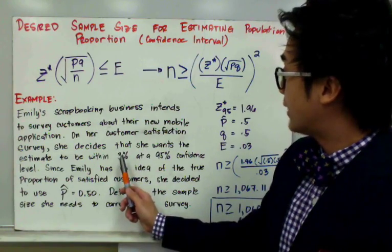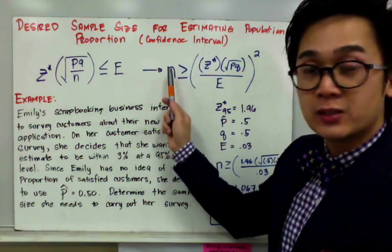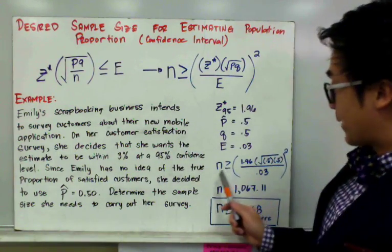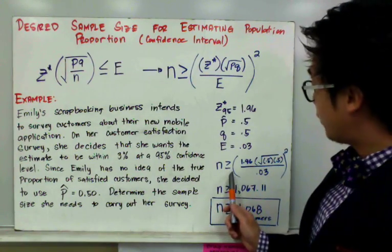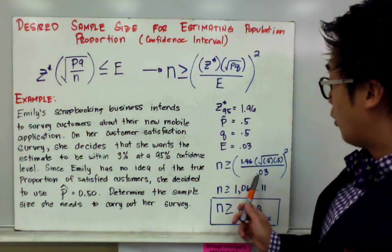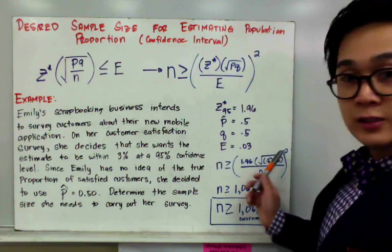Now we're ready to compute our minimum sample size for this word problem. Emily needs N greater than or equal to 1.96 times the square root of 0.5 times 0.5, all over 0.03 squared,